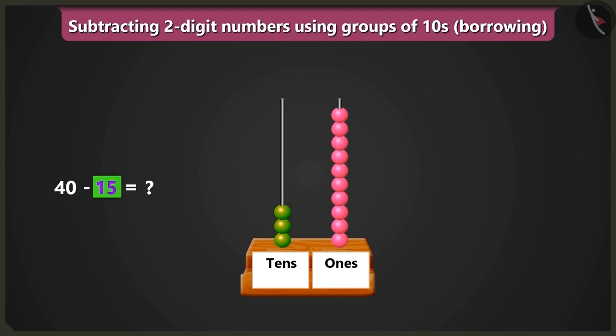Now to subtract fifteen from forty, first of all from the box of ones, we will remove one, two, three, four, and five beads.